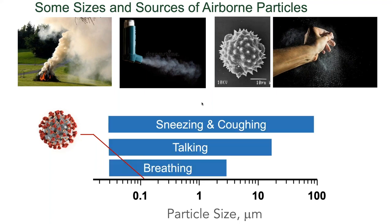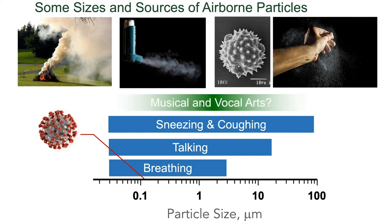The human body is really impressive at producing particles all along this size range. Even by simply breathing, particles come out of our respiratory tract. When we talk, even more particles come out across a broader size range. Sneezing and coughing can produce lots of particles of many different sizes. This is one of the reasons why we have to wear masks right now — if we're infected with COVID-19, we'll emit particles of all these sizes. At CSU, we're also researching whether playing an instrument or singing produces particles in the same size range, and the evidence points to yes.